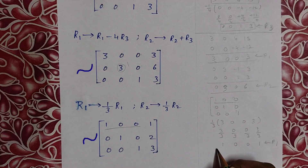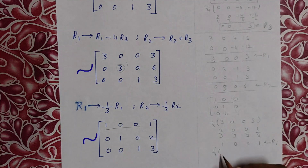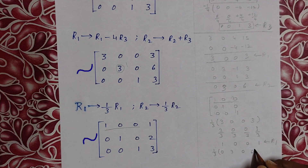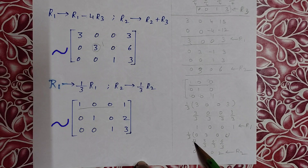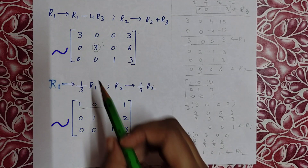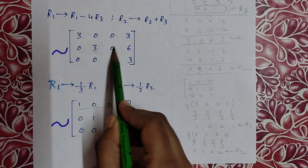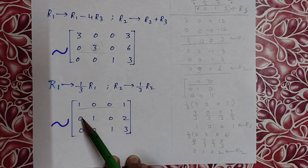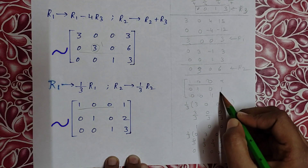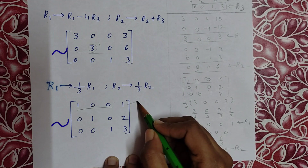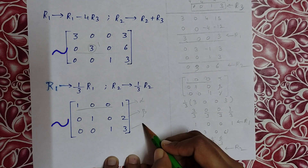R2 tends to (1/3)R2: (1/3) into [0, 3, 0 | 6] — 3/3=1, 0/3=0, 6/3=2 — giving R2 as [0, 1, 0 | 2]. The matrix is now the identity matrix with the solution column giving alpha=1, beta=2, gamma=3.